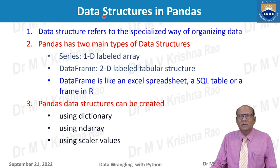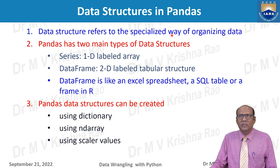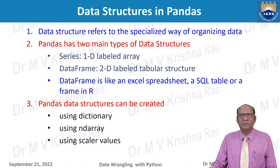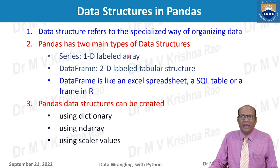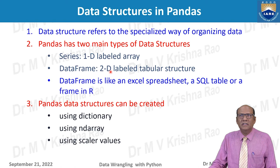Data structures are the major setup to organize data in any language. In pandas, the data structure refers to the specialized way of organizing data. Pandas has two main types: Series, which is a one-dimensional labeled array — it is an array with labels, somewhat like one element in a dictionary — and DataFrame, which is a two-dimensional labeled tabular structure, like an Excel spreadsheet, SQL table, or a frame in R.